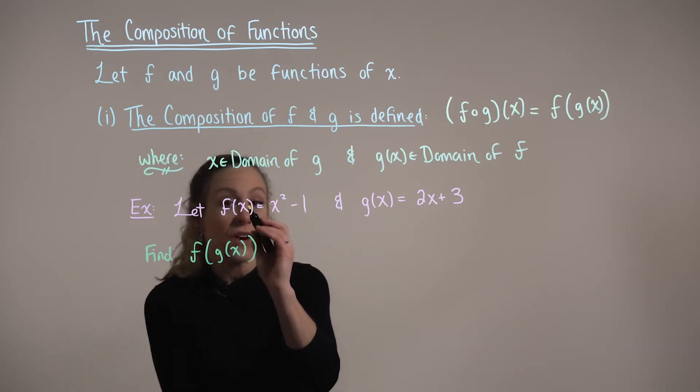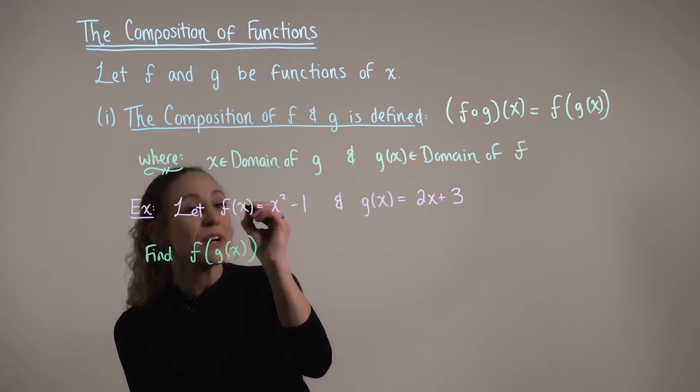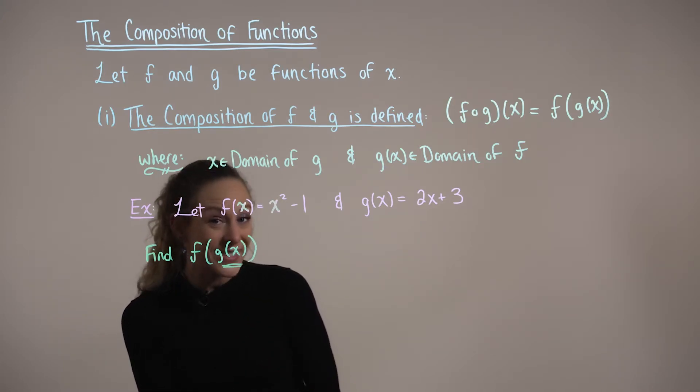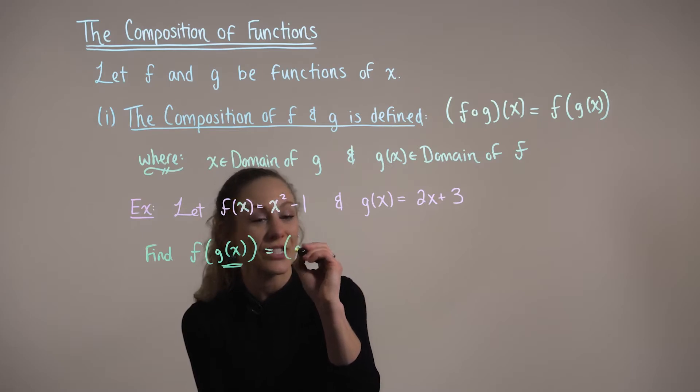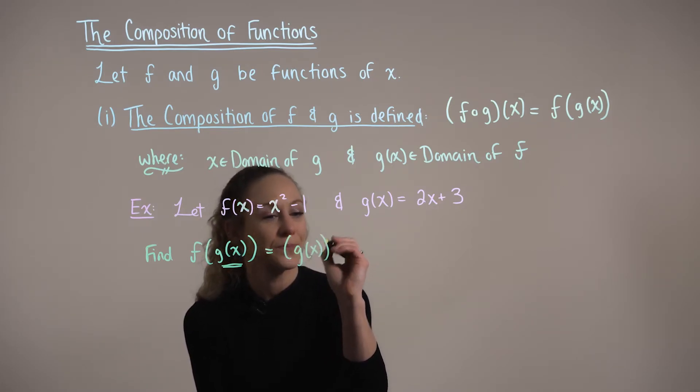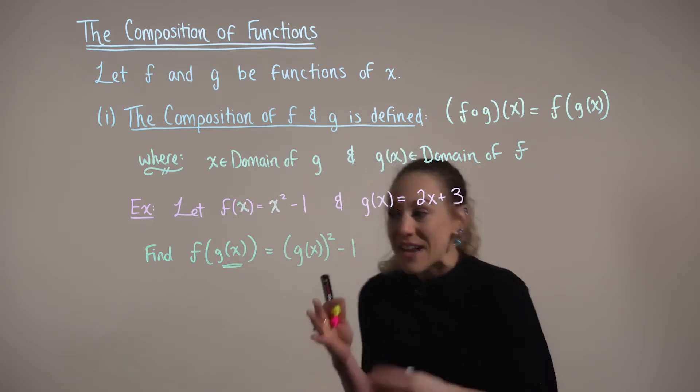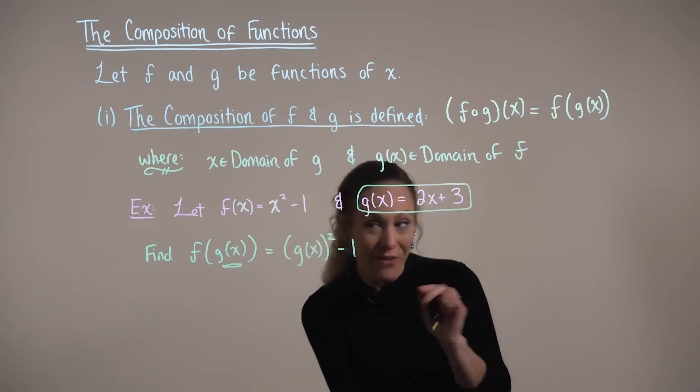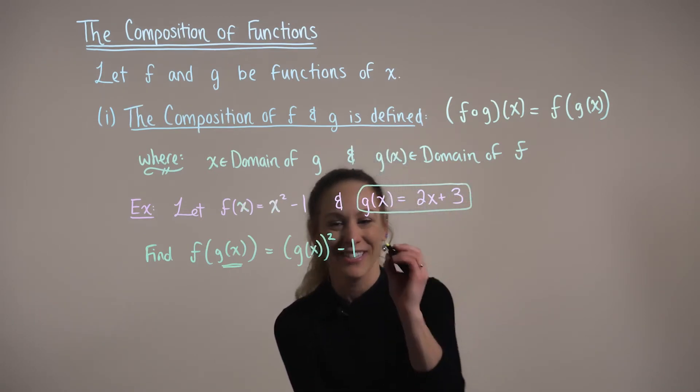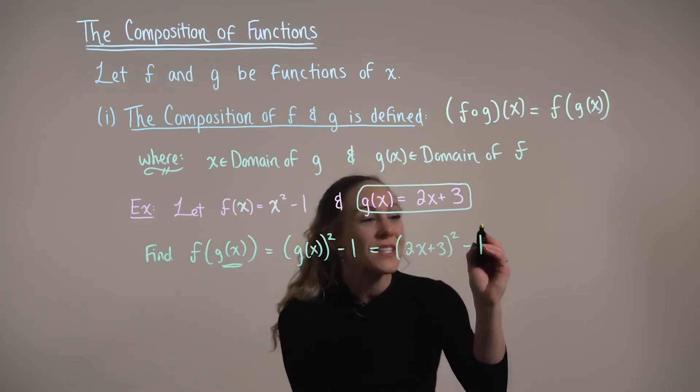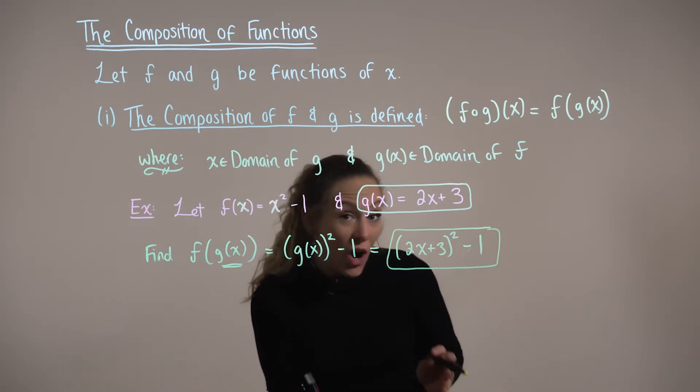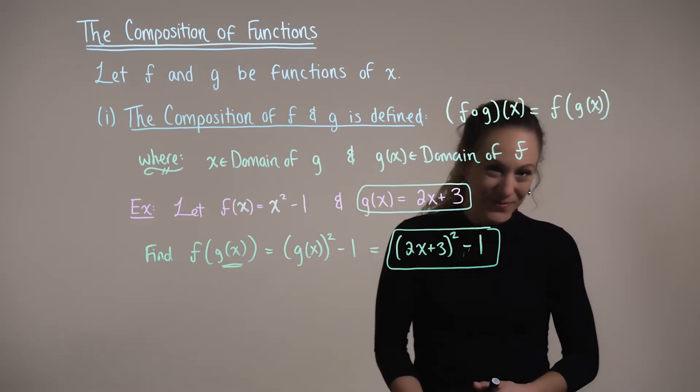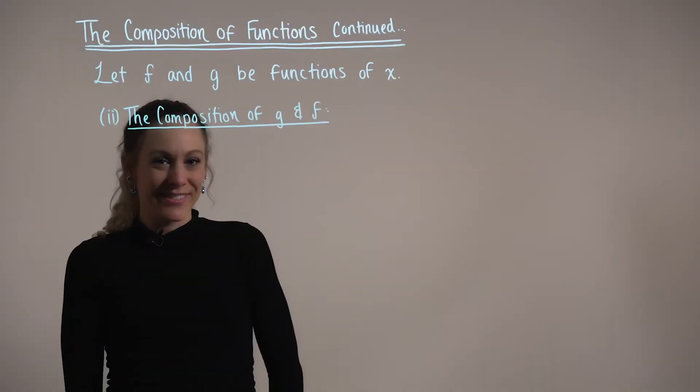So looking up at the function f, anywhere you see an x, we now want to replace that input value with g of x. So we can rewrite this as g of x squared minus 1. And now that the initial substitution is done, we can go ahead and plug the function g of x into our composition. So this is our final answer. And we can see here that the composition of two functions produces a new function.